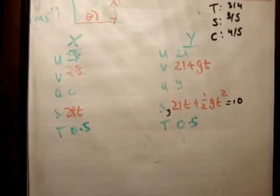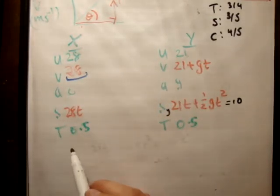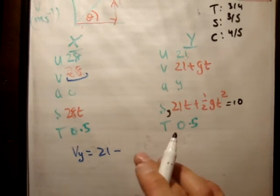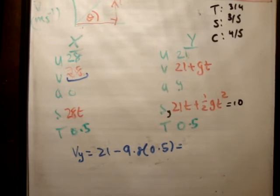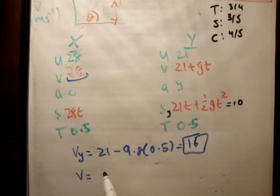So as a result, this here is unchanged. However, v sub y is equal to 21 minus 9.8 times 0.5. And that's equal to 21 minus 4.9. That's equal to 16.1. So we'll just say 16. Therefore, v is equal to 28 i-hat plus 16 j-hat meters per second. Let's just check that. Yeah, that's correct.